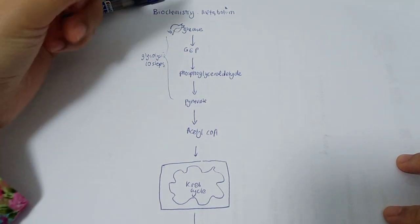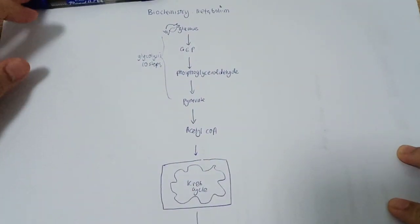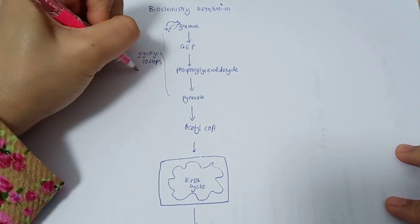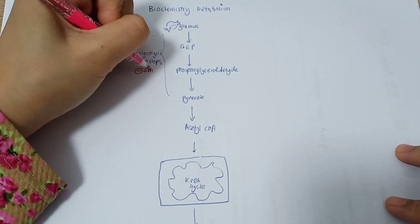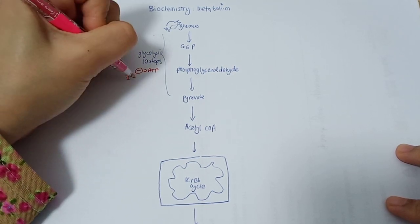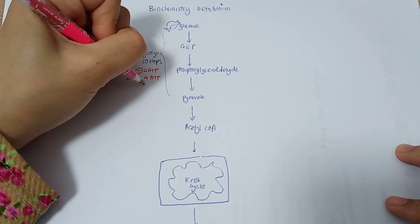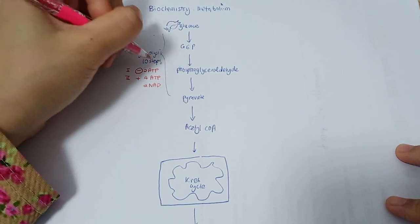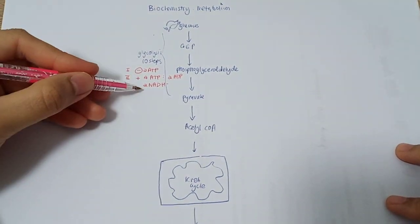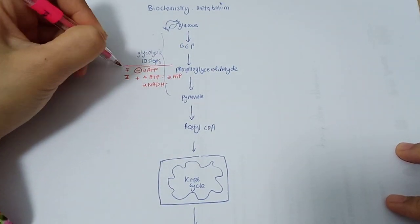Basically, one of the favorite questions is about the net ATPs produced in this whole cycle. In general, in glycolysis we're going to use 2 ATP in the first phase, and the second phase will produce 4 ATPs and 2 NADH. In total, the net will be 2 ATPs and 2 NADH.